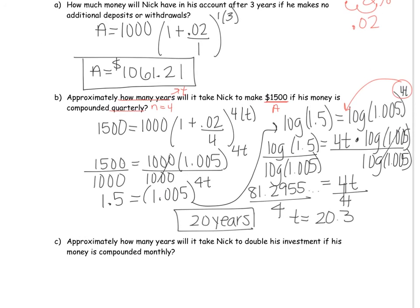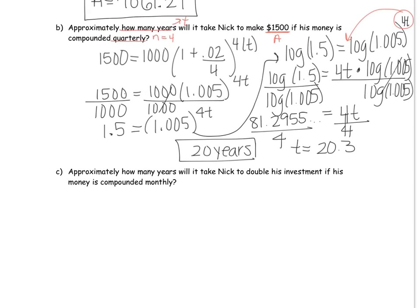For part C homework, follow the same way we did part B. Remember that compounding monthly means n equals 12. For his money to double, if he started with $1,000 he should be making $2,000. Those are my hints — see if you can finish that for homework. Now I'm going to move on to the last example.